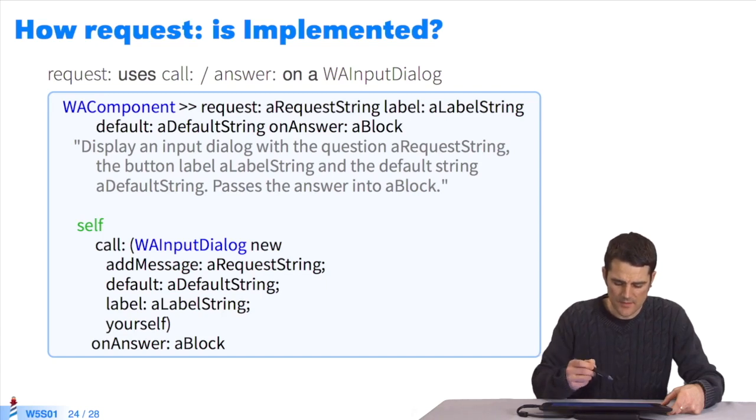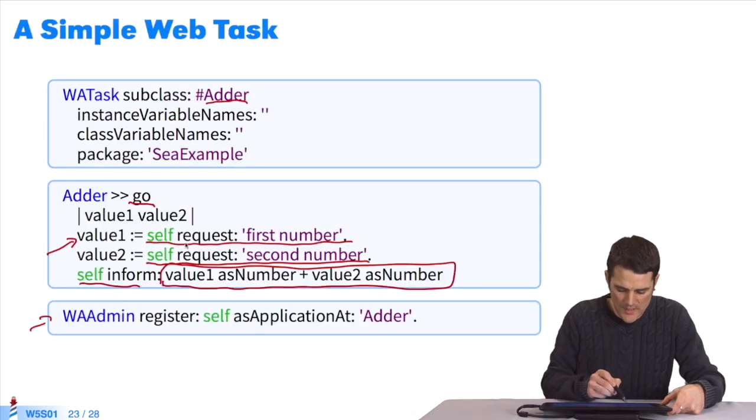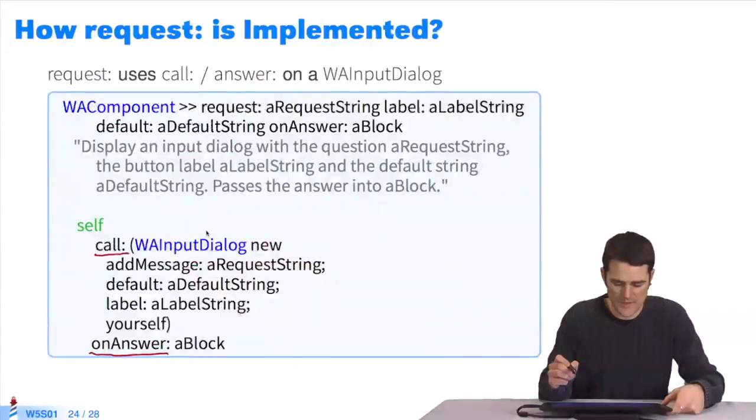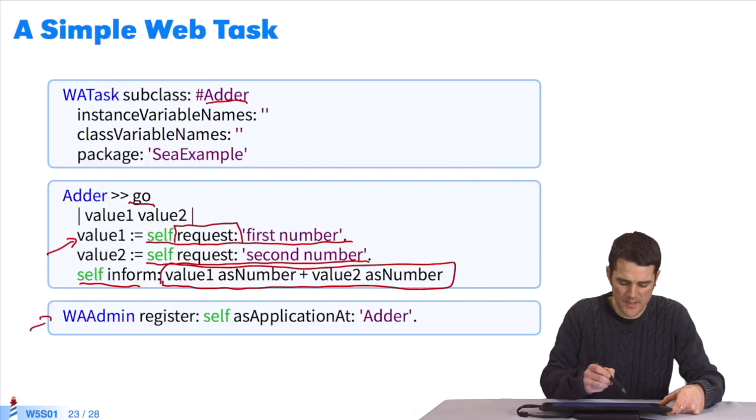So, if we look inside it, how is the request method implemented? The request method is a string. Internally, as we can see, it uses call and answer. If we go back to the previous example, we see that when we made the request here, internally, it called another component, the WAInputDialog component. It displayed the string, and this component will return the result to whoever requested it. In this instance, who requested it? Our component adder. So it will recuperate a value in value 1, the same thing for value 2, and then in inform.